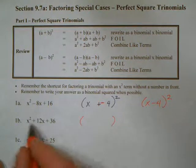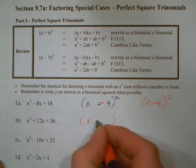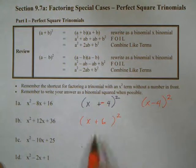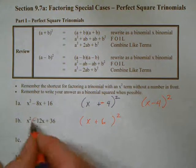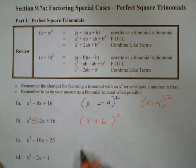Look at our next one. The first is a perfect square, and the last is a perfect square. So our answer is x plus 6 squared. It's a plus because the 12 is a plus as well.